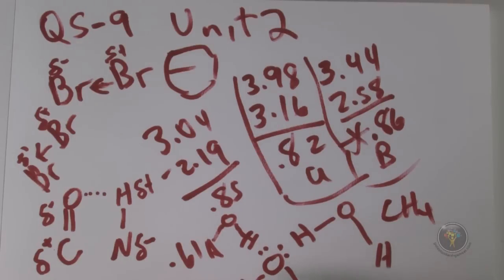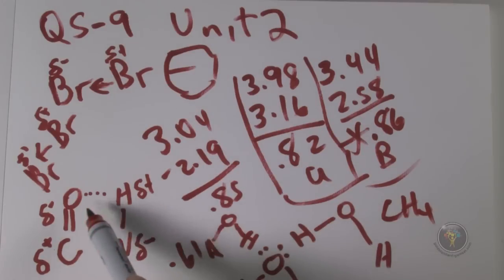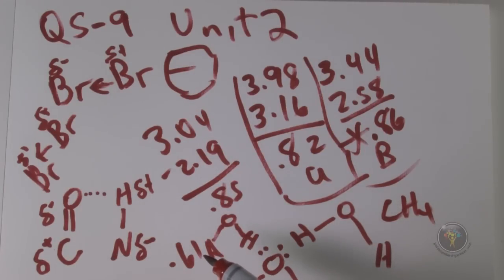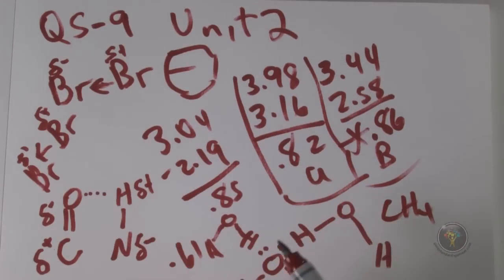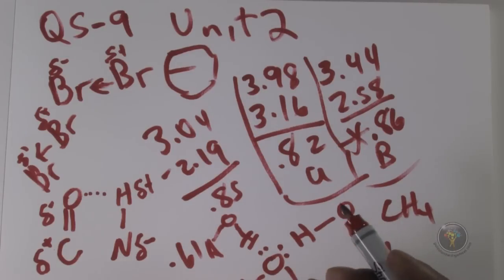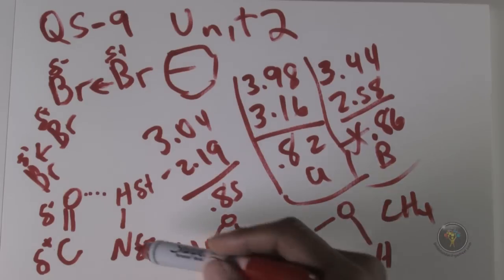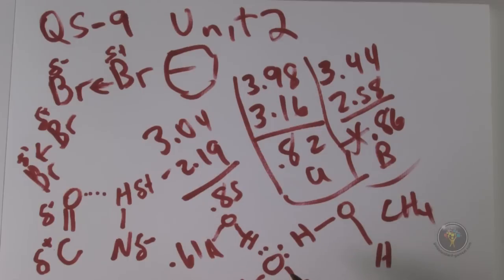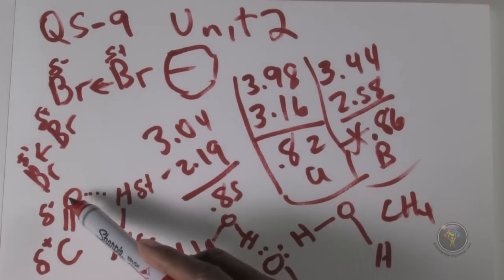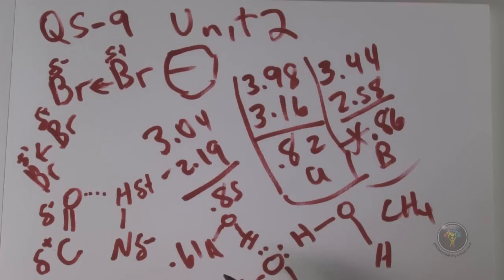Looking at the answer choices for Q6: A says two hydrogen bonds formed involving all four atoms — but clearly only one hydrogen bond is being formed. Answer B, an attraction of the nitrogen atom in one bond to the oxygen of the other — these would repel, because the basic concept of organic chemistry is electrostatics: opposites attract, like charges repel. So that's not possible. And C, an attraction of the hydrogen atom in one bond to the oxygen atom in the other — that's perfect and makes sense.